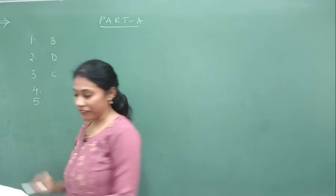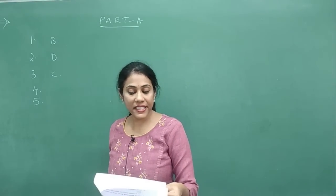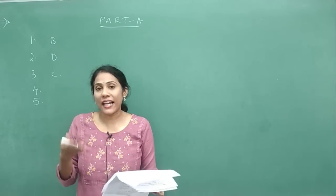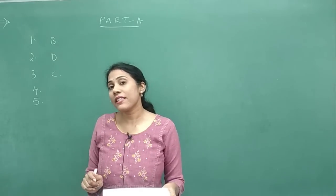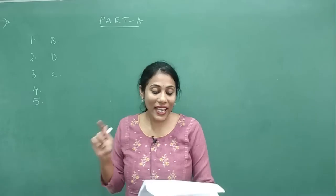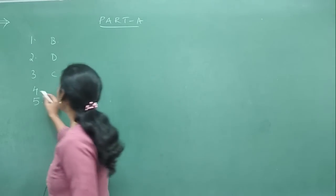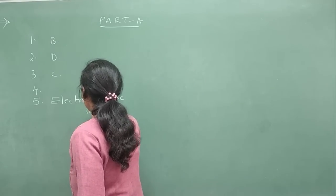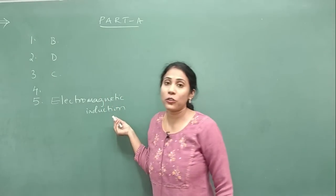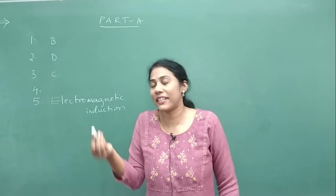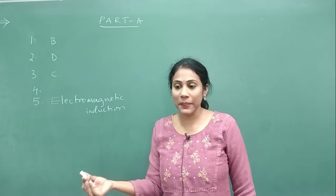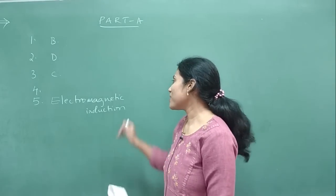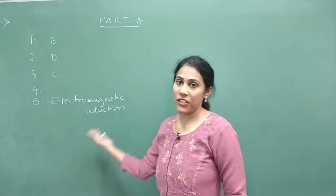Question number 5: a bar magnet is inserted into a coil and withdrawn as shown in the figure. Mention the principle found here. This is Faraday's coil and magnet experiment. All of Faraday's experiments were to prove electromagnetic induction. They are asking what principle is involved, so you can write electromagnetic induction. You can also write its definition: a current gets induced when a conductor is kept in a changing magnetic field. Both the term and its definition are fine as an answer.